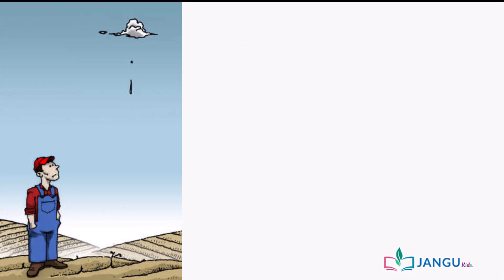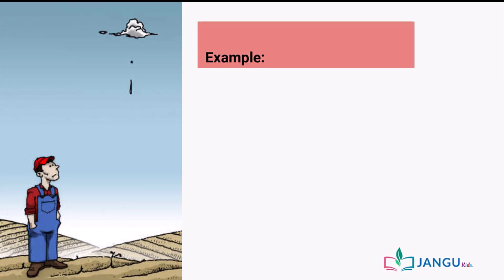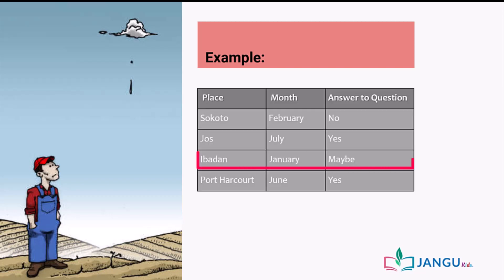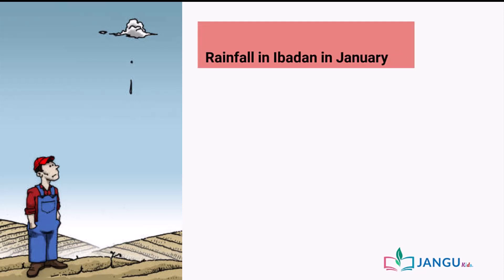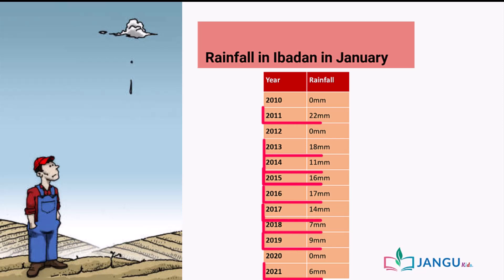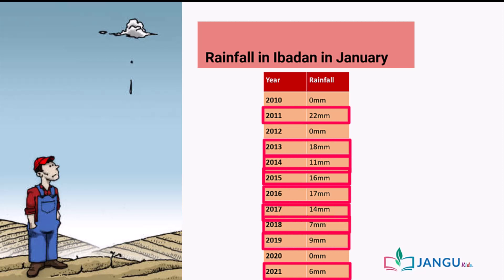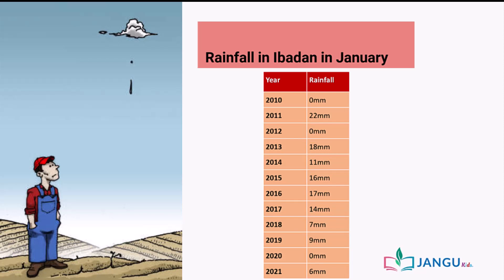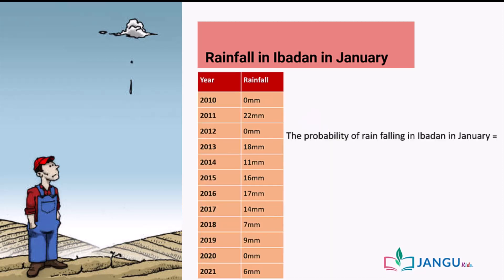Looking at our earlier example about a farmer trying to determine rainfall for his crops, rather than guessing based on experience, we can use statistical data to predict rainfall. To determine the probability of rainfall in Ibadan in January, we use rainfall data from previous years, just as you can see from the table on your screen. The table shows data of January rainfall over 12 years. From the data, we see that it rained in 9 Januaries. If future years follow the pattern of the past, it is likely that in Ibadan, rain will fall in 9 out of the next 12 Januaries. Therefore, the probability of rainfall in Ibadan in January is 9 out of 12, or 3 out of 4, or 75%.